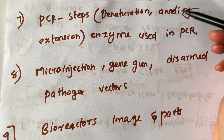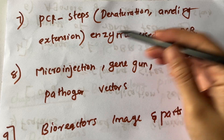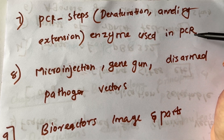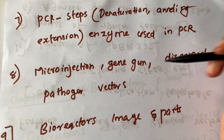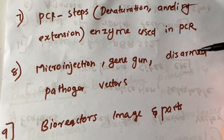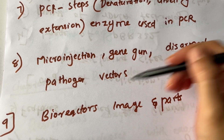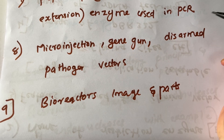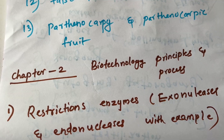We will talk about PCR steps: denaturation and extension. We will talk about the enzyme used in PCR. We will talk about microinjections, gene gun, and disarmed pathogen vectors. Then, bioreactors — their images and parts. We will cover the question paper topics in this chapter.